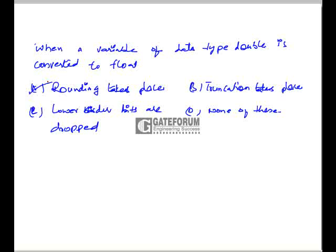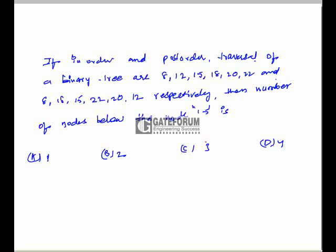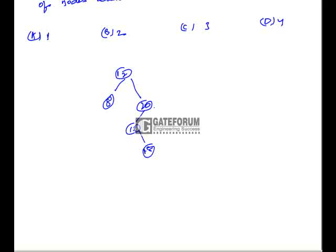In this question, the inorder traversal and postorder traversal of a binary tree are given and we have to find the number of nodes which are present below the node 15. So by using inorder and postorder traversals, if we construct the binary tree, we will be getting tree as this one. And here the question is the number of nodes below the node 15. So this is 15 and the number of nodes below 15 is only 1 node which is 18. So here the correct option is option A.